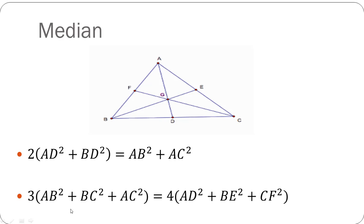The second formula is: the sum of the squares of all the sides into 3 is equal to the sum of the squares of all the medians into 4. Therefore, 3 times (AB² + BC² + AC²) is equal to 4 times (AD² + BE² + CF²).